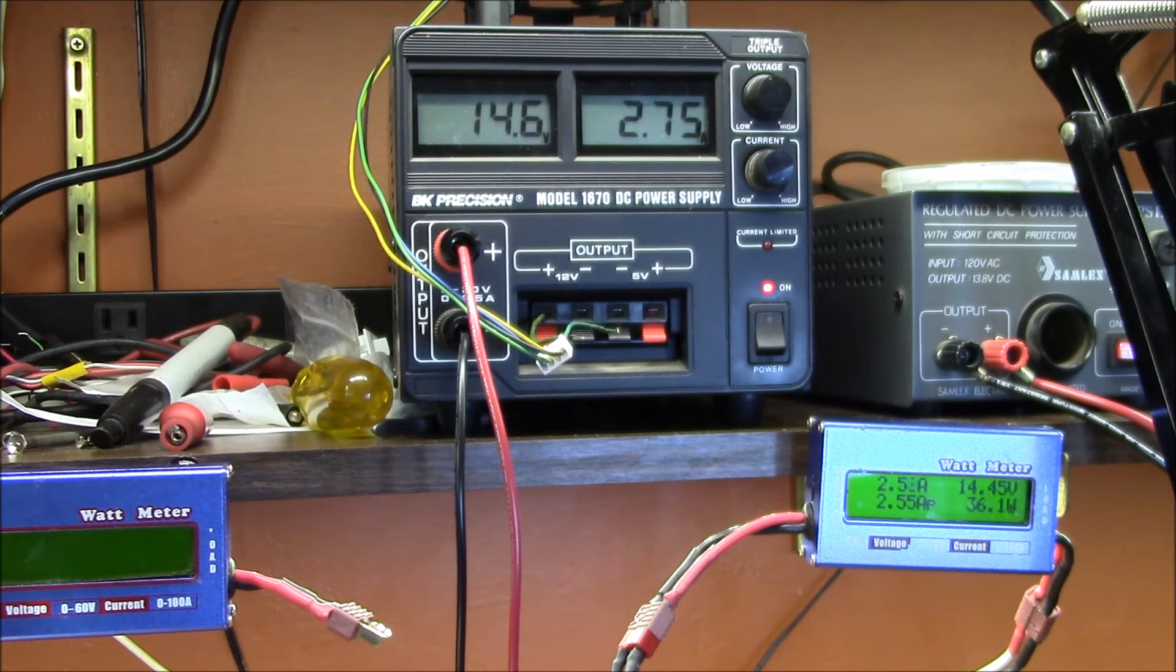So using a DC buck converter to limit the voltage to 12 volts has two benefits. First, it prevents over voltage and thus over current in the LEDs. And secondly, it acts like a transformer. And at the higher voltages, it should use less current to supply the strip at more of a constant power. So we'll look at these two effects and see how well it performs.